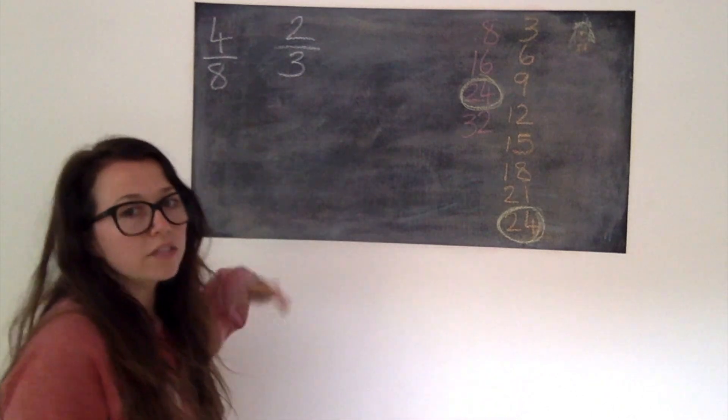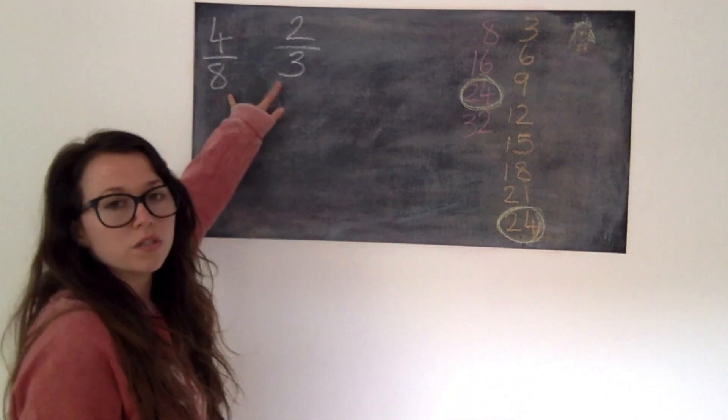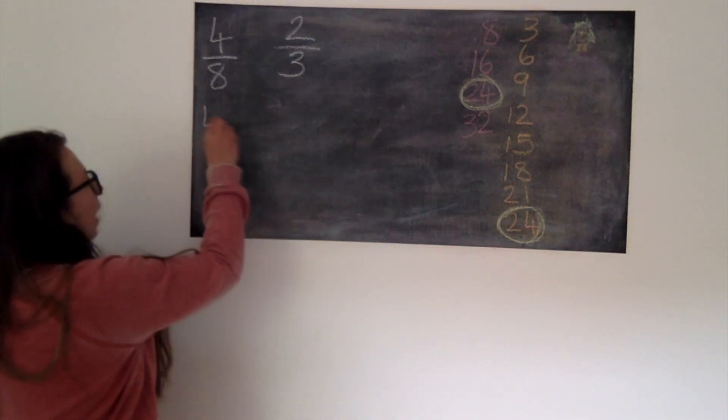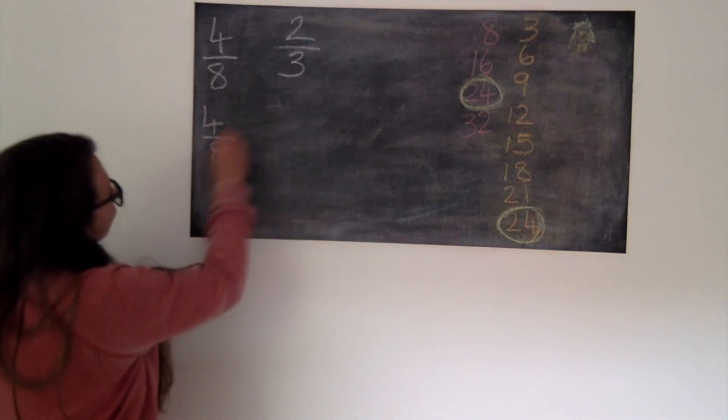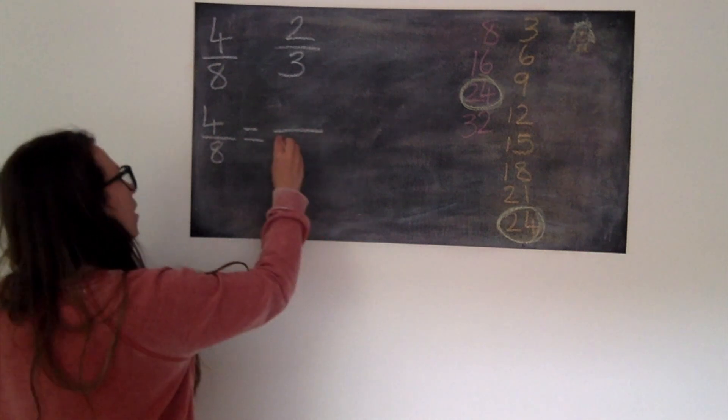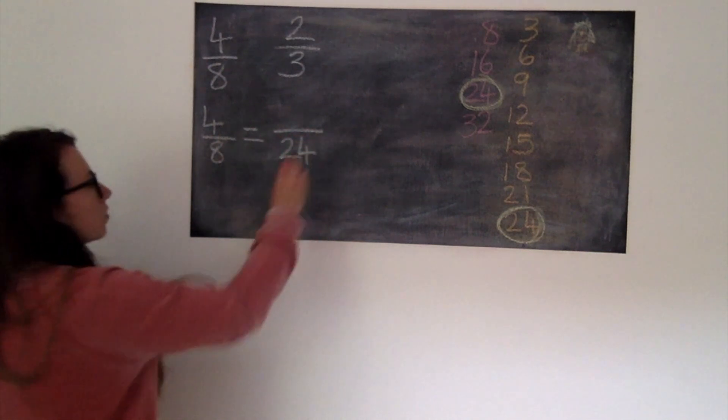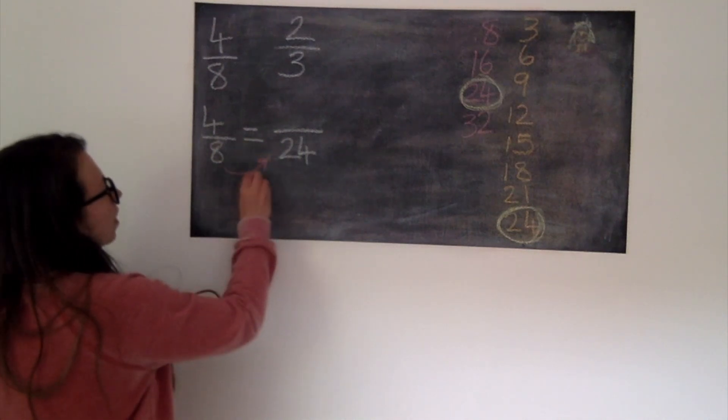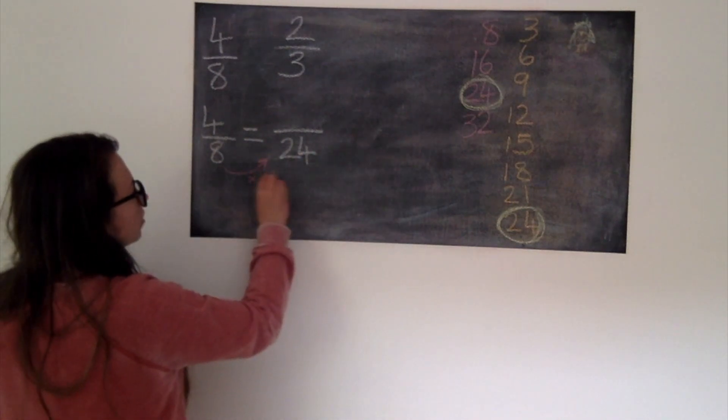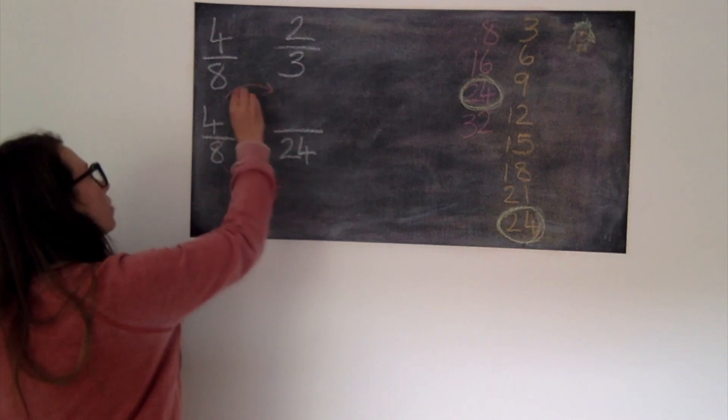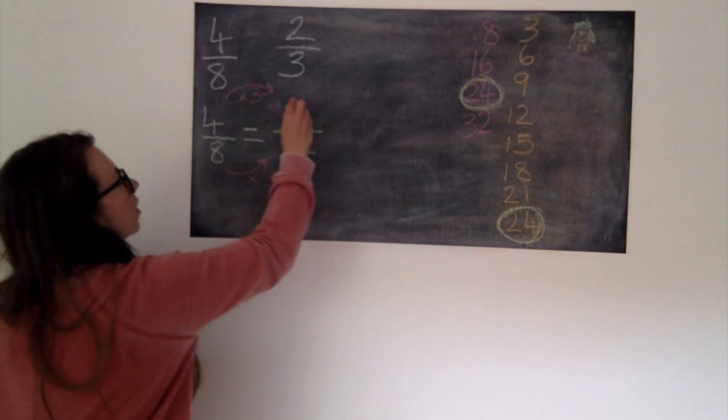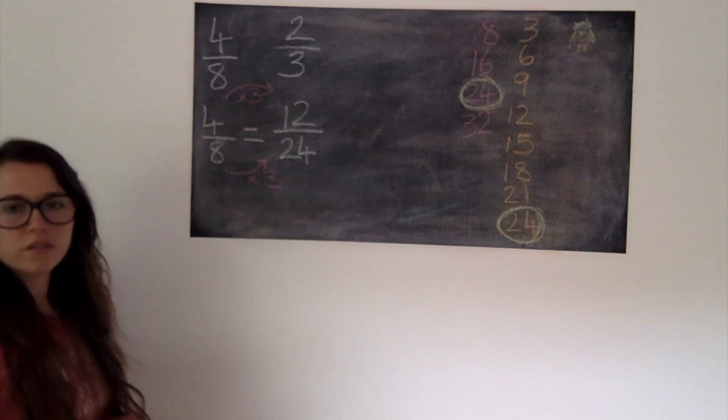I'm now going to use that to help us create some equivalent fractions to compare these two fractions. So we'll start off with 4/8ths. 4/8ths is equal to how many 24ths? So what have I done to the denominator to get to 24? I can use my times tables. I've timesed it by 3. So we must do the same to the numerator. 4 times by 3 gives me 12. Hopefully you've spotted something else about this fraction as well.